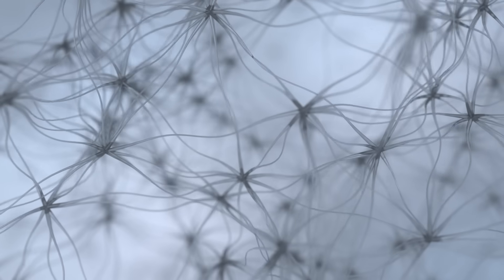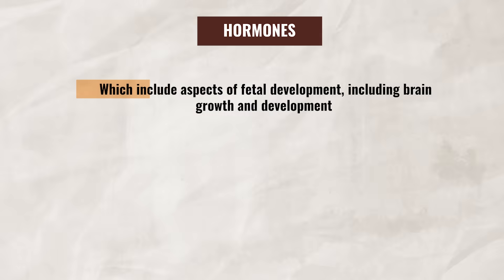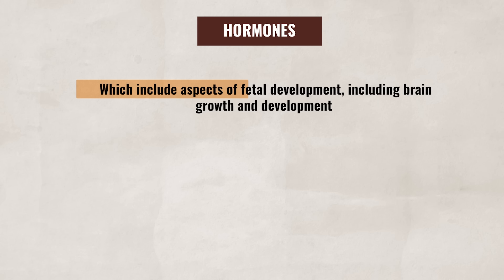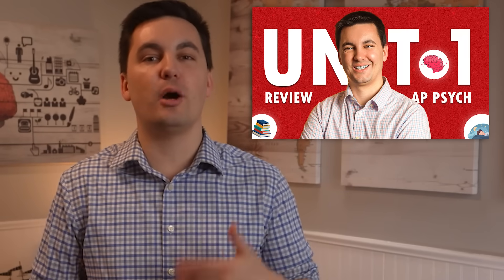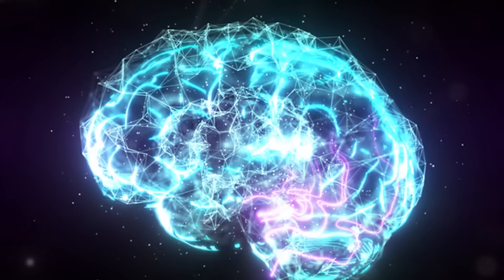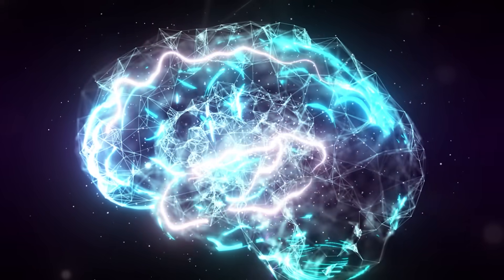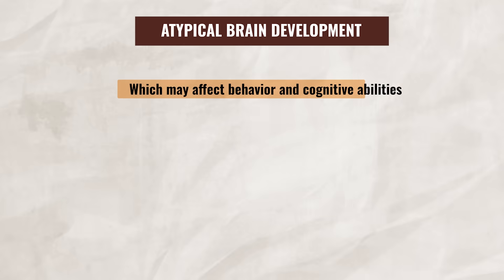Moving on to our next factor, we need to also talk about hormones and how they impact development. Remember, hormones are chemical messengers that regulate many bodily functions and behaviors, which include aspects of fetal development, including brain growth and development. We talked about hormones in unit one when we talked about neurotransmitters and hormones. Imbalances in hormones can lead to atypical brain development, which may affect behavior and cognitive abilities.